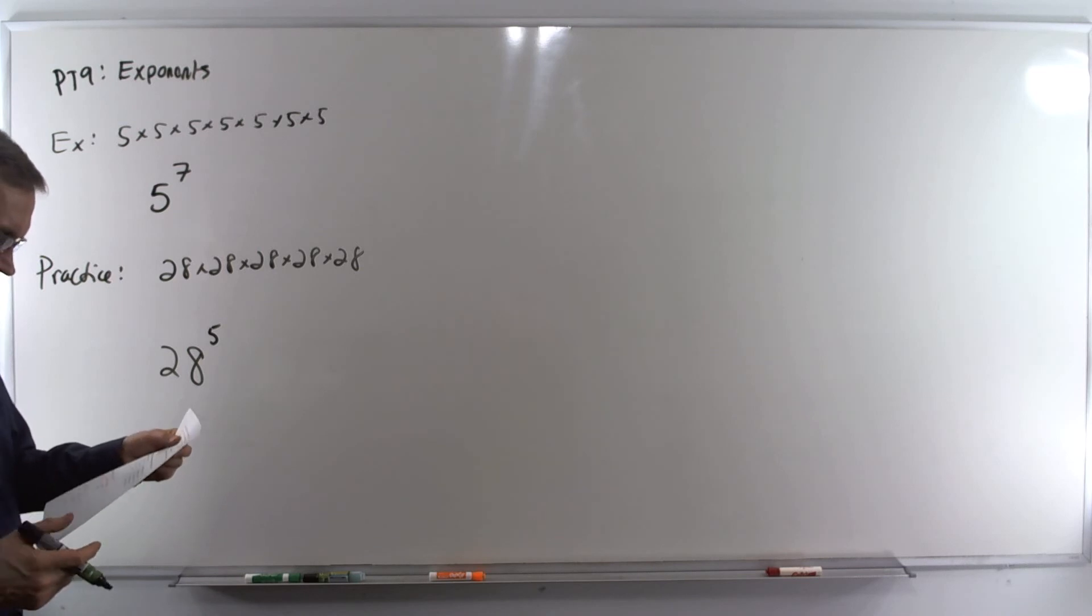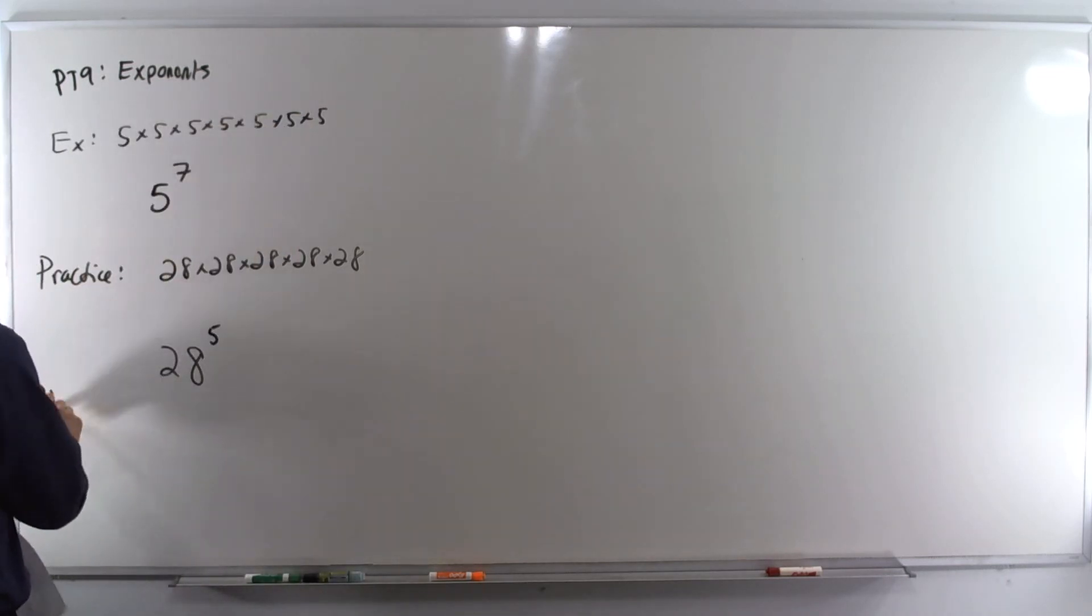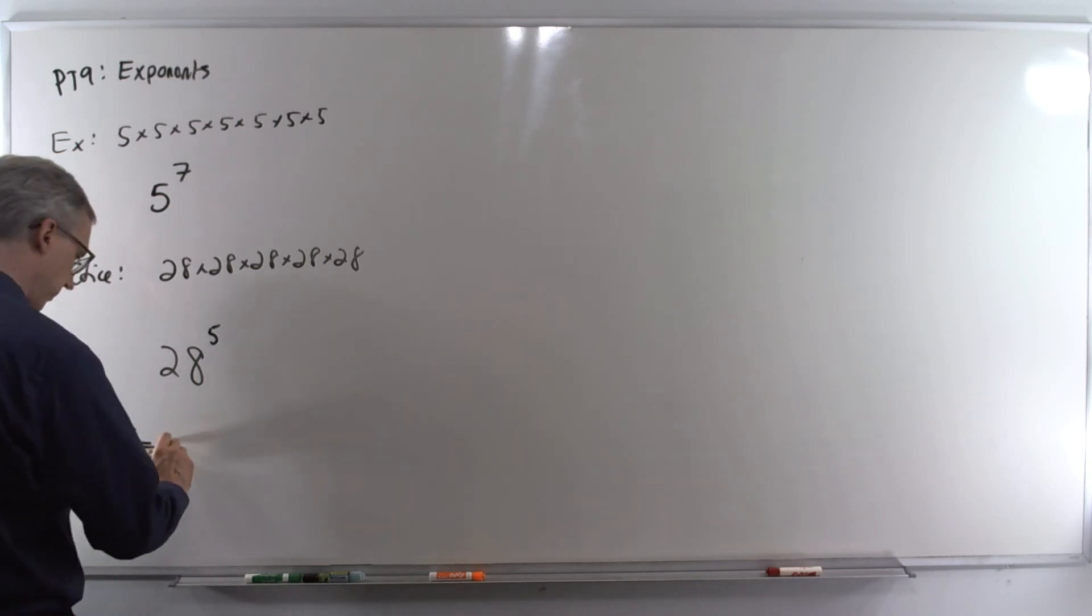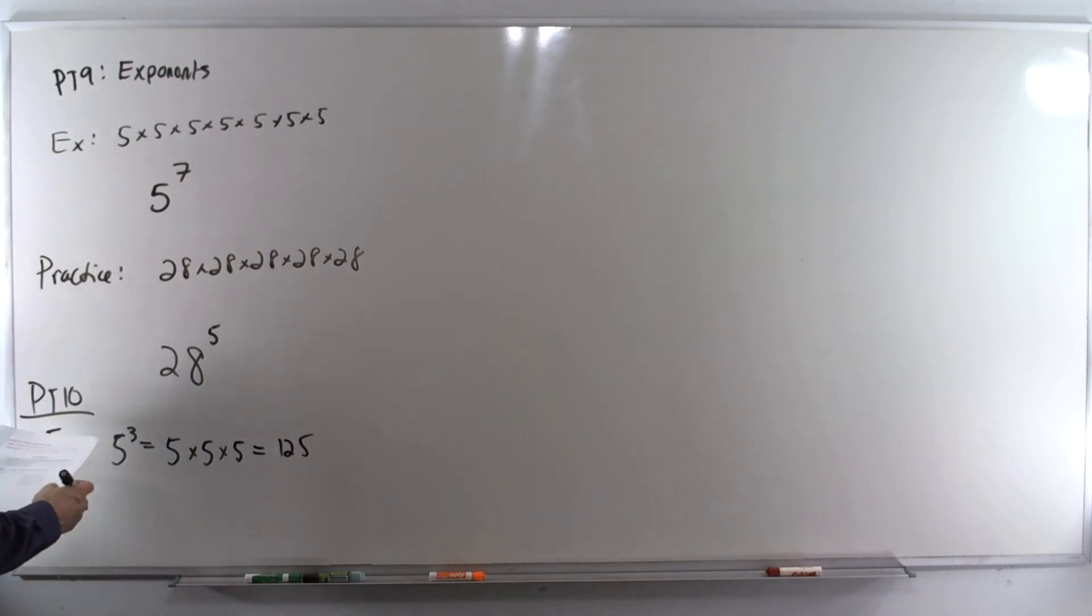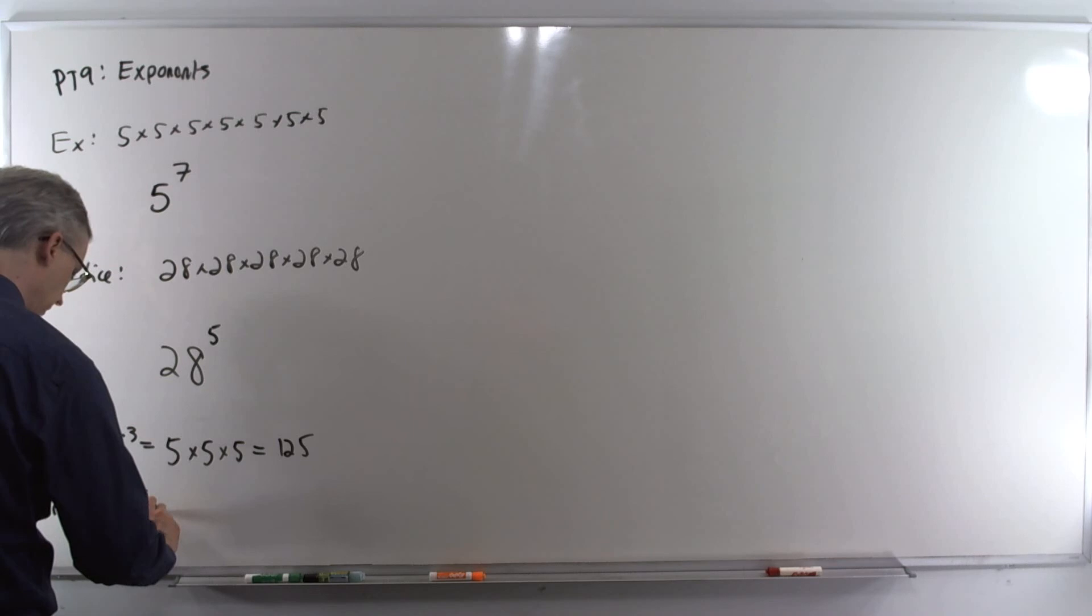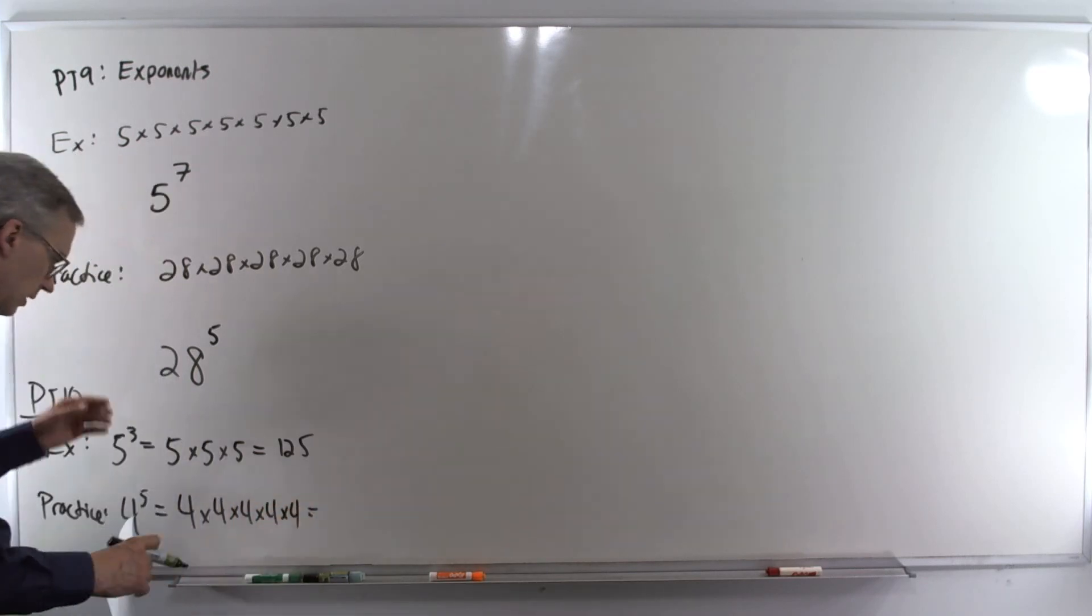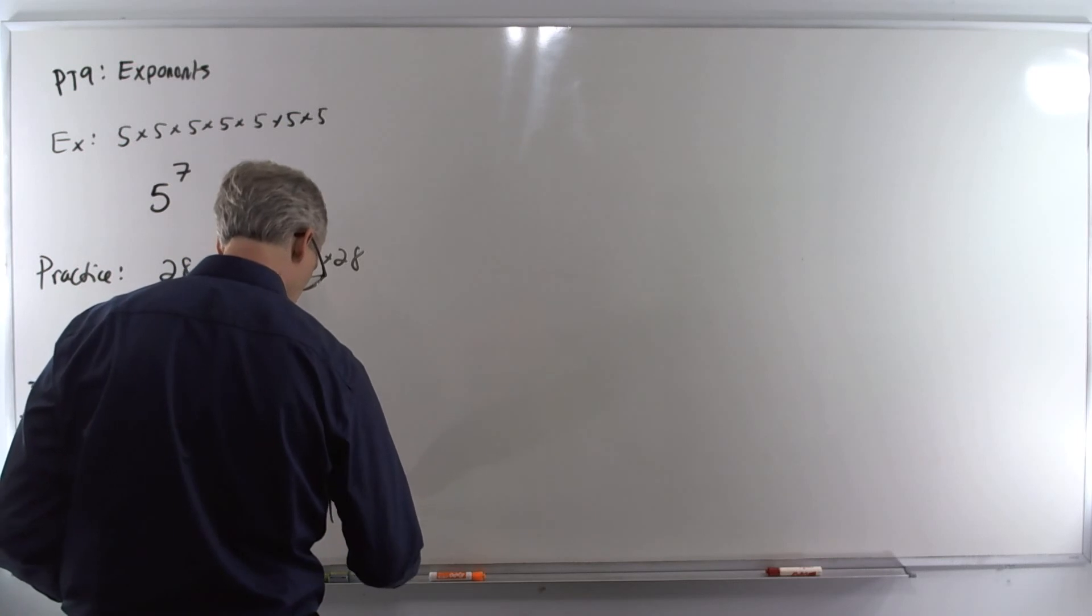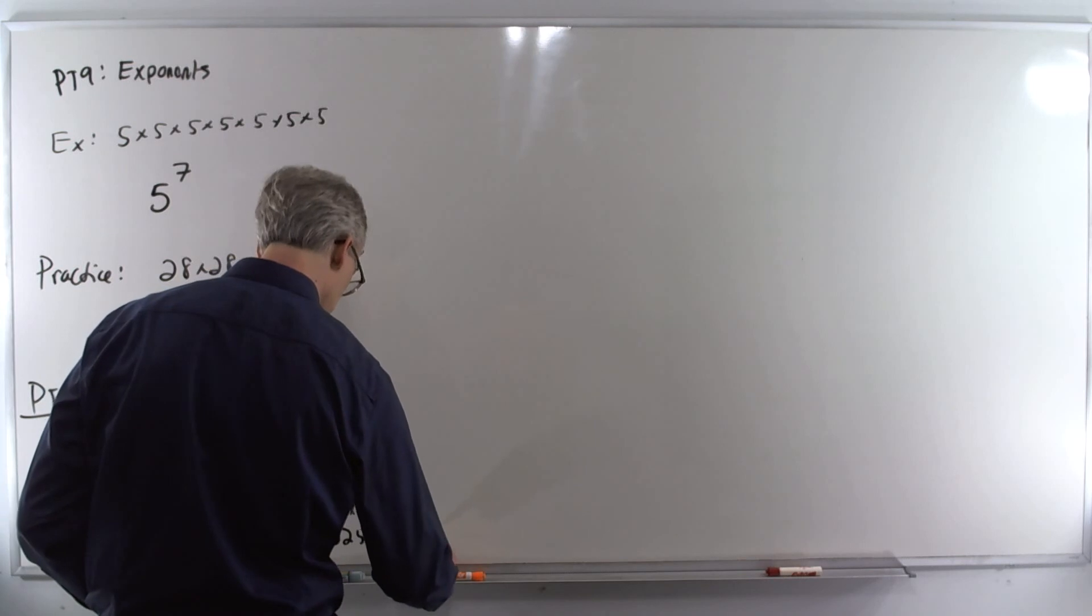Now we do the reverse, and evaluate. So, 5 to the third power, for example. Now we'll write it out as multiplication. 5 is the number being multiplied, and it appears three times. 5 times 5 times 5. Multiply that out, and we get 125. Practice. 4 to the fifth power. 4 is the number being multiplied, and it appears five times. Combine a couple of these pairs into sixteens, and then 16 times 16 is 256. Times 4 gives us 1024.